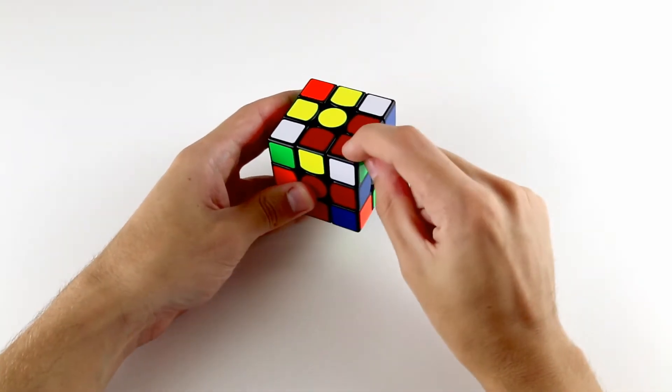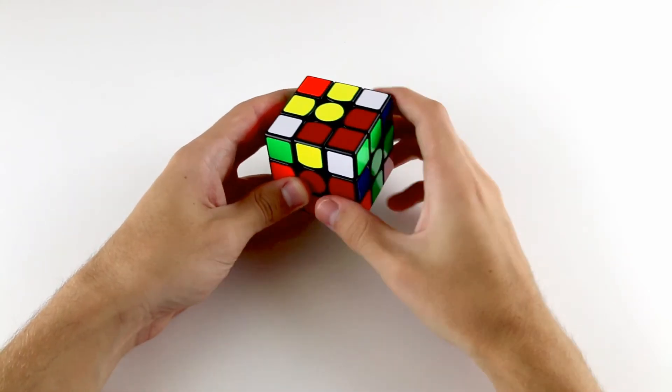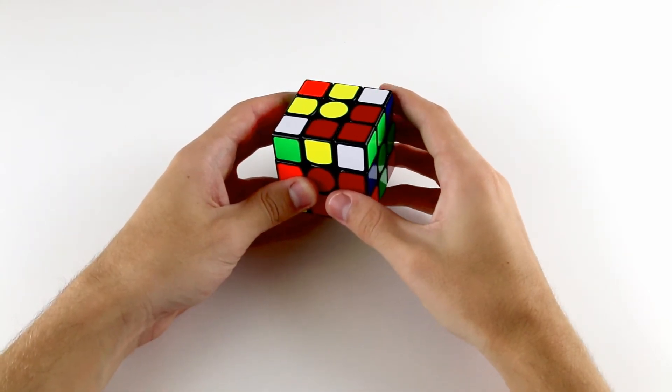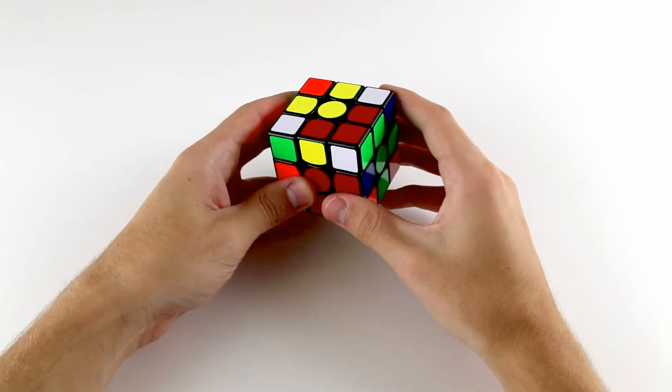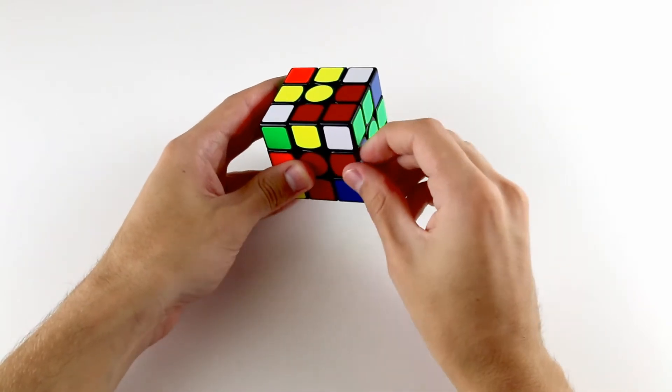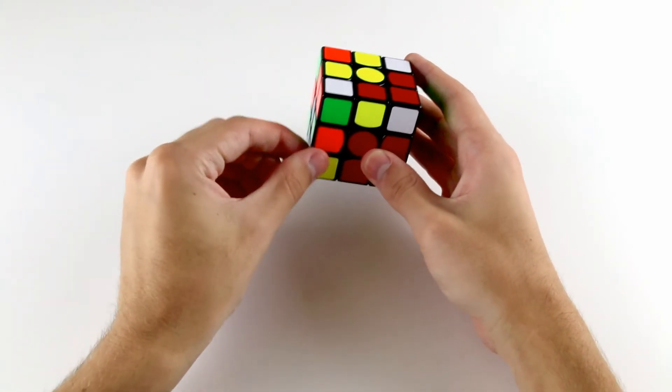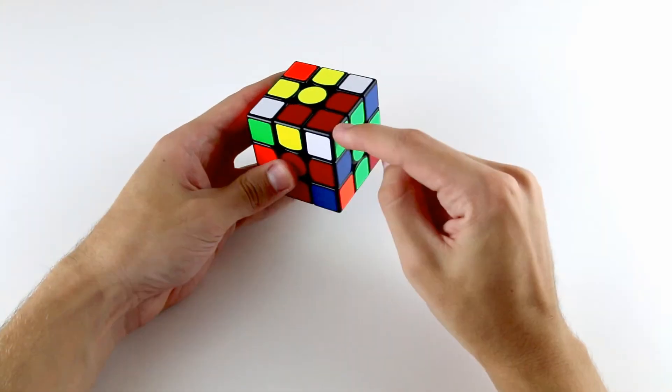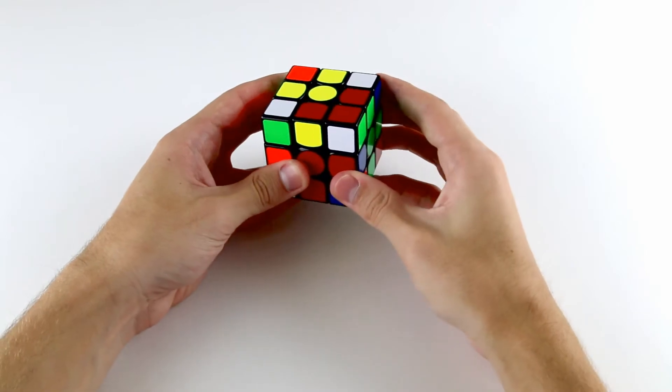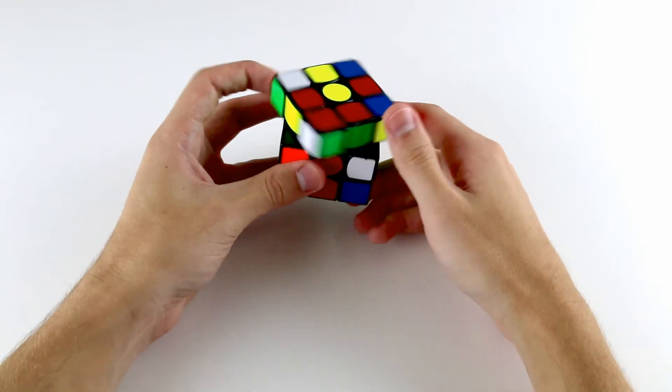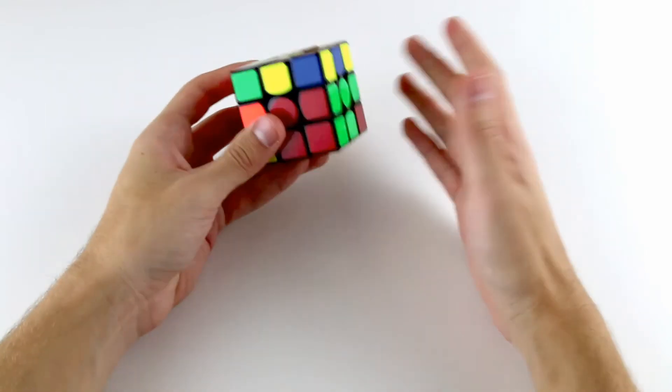From here we simply have a paired up F2L pair in our top layer, and I showed you how to solve these cases in the F2L case 2 video. Either it will need to go to the right like this, or you'll have the mirrored case over here, in which case you need to bring it into the left slot. To simply insert this pair, we do U, R, U prime, R prime. And that's it.